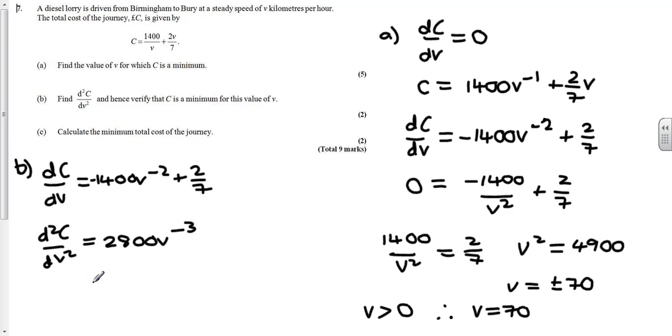And that means we get 2800 over v cubed. Now it says verify it's a minimum. If it is a minimum, then when we put our value of v of 70 from part A into this, we should get a positive answer out. A positive answer from the second derivative indicates a minimum. So let's find out. If we do that calculation, you shouldn't need me to tell you that that's going to be a positive, therefore it's a minimum.